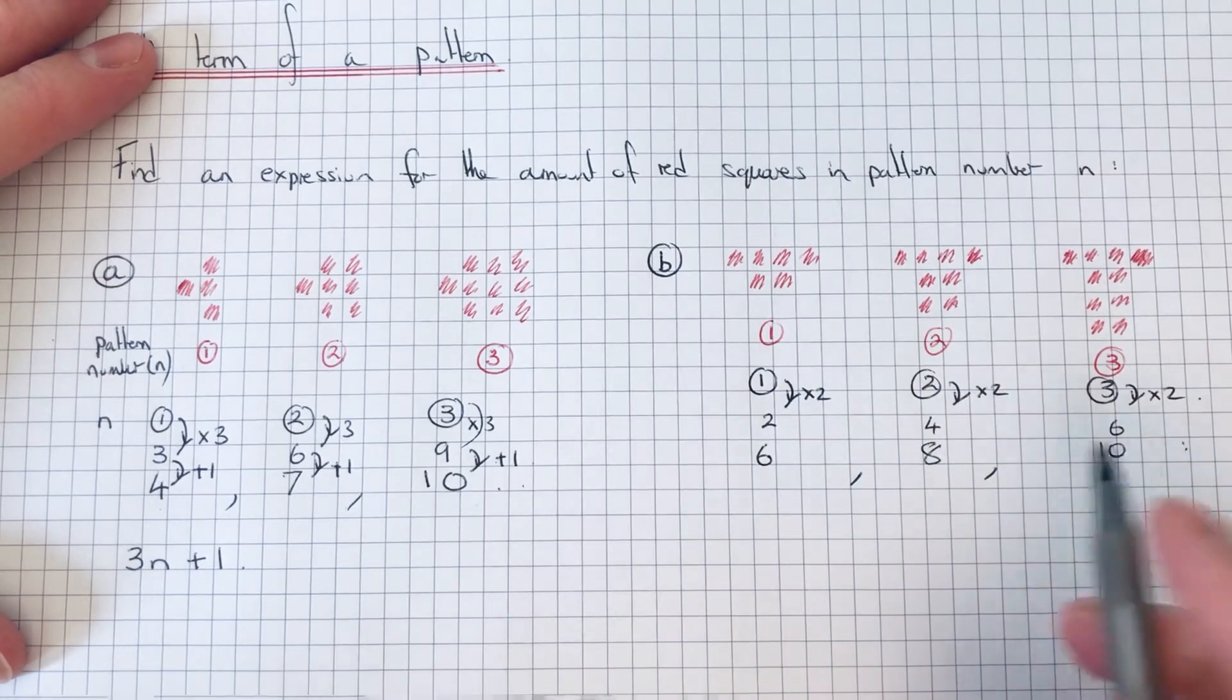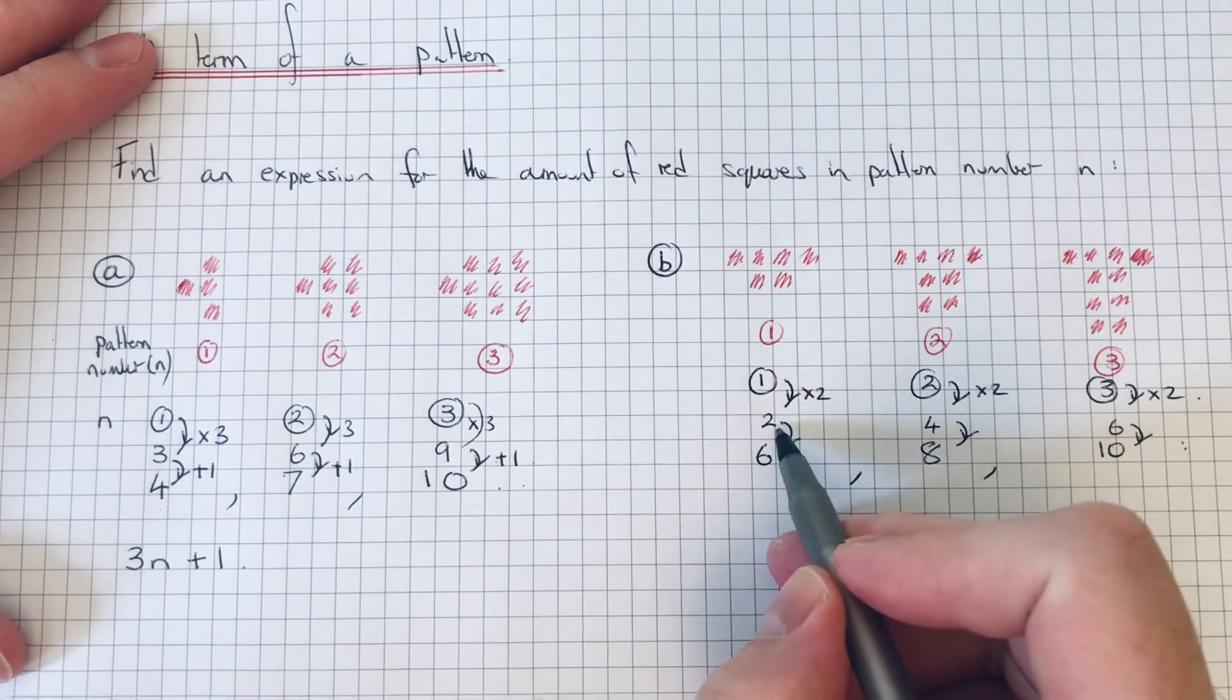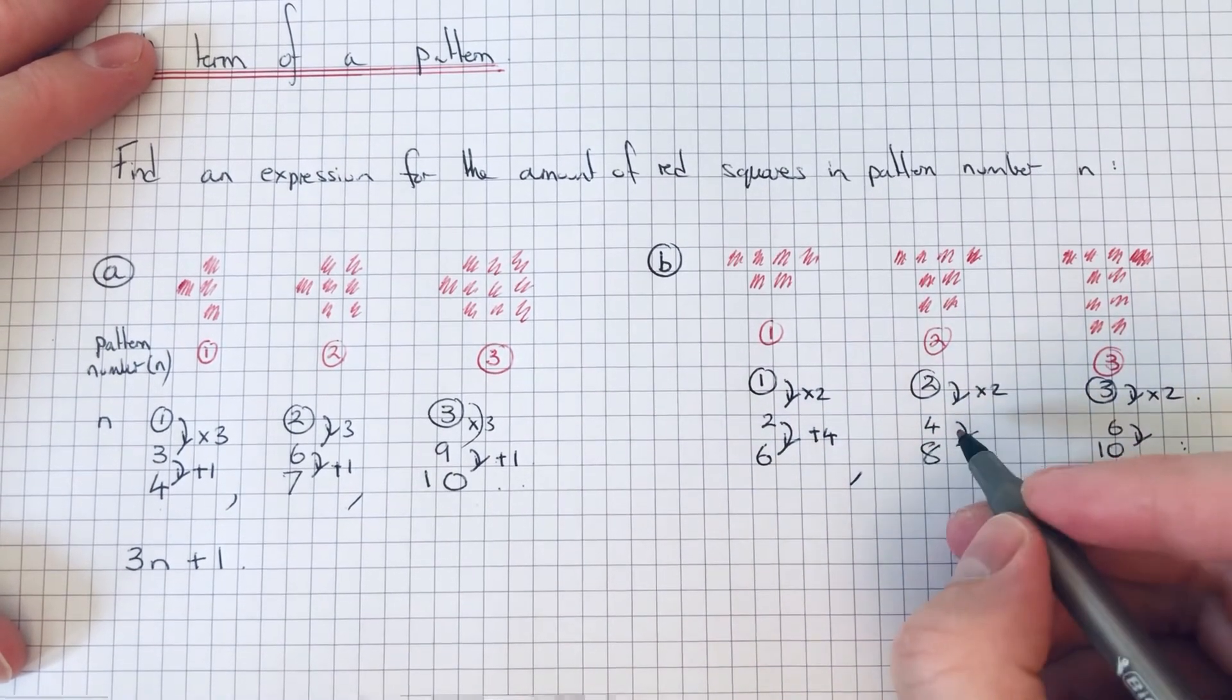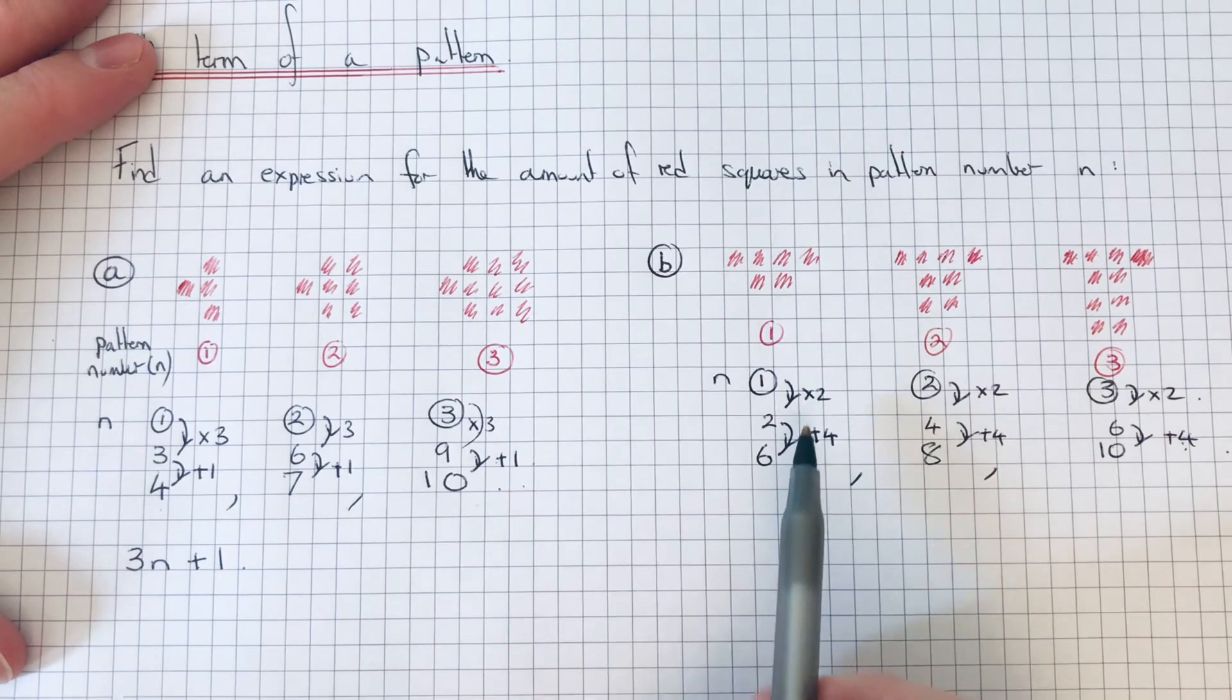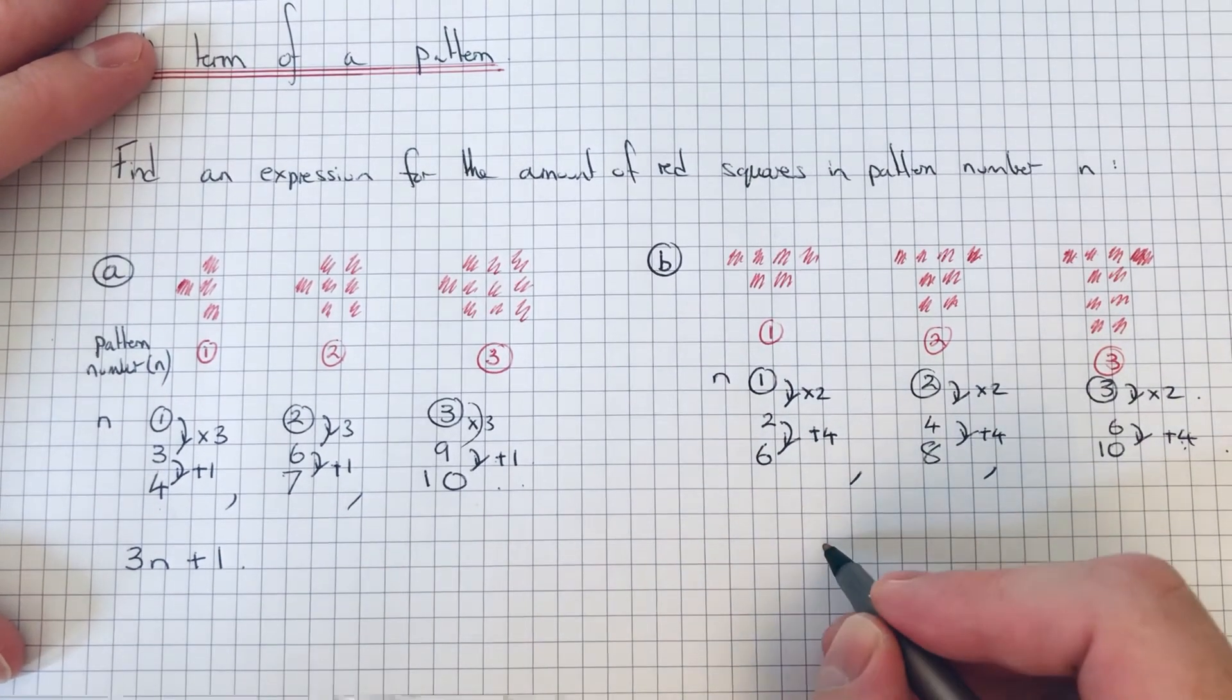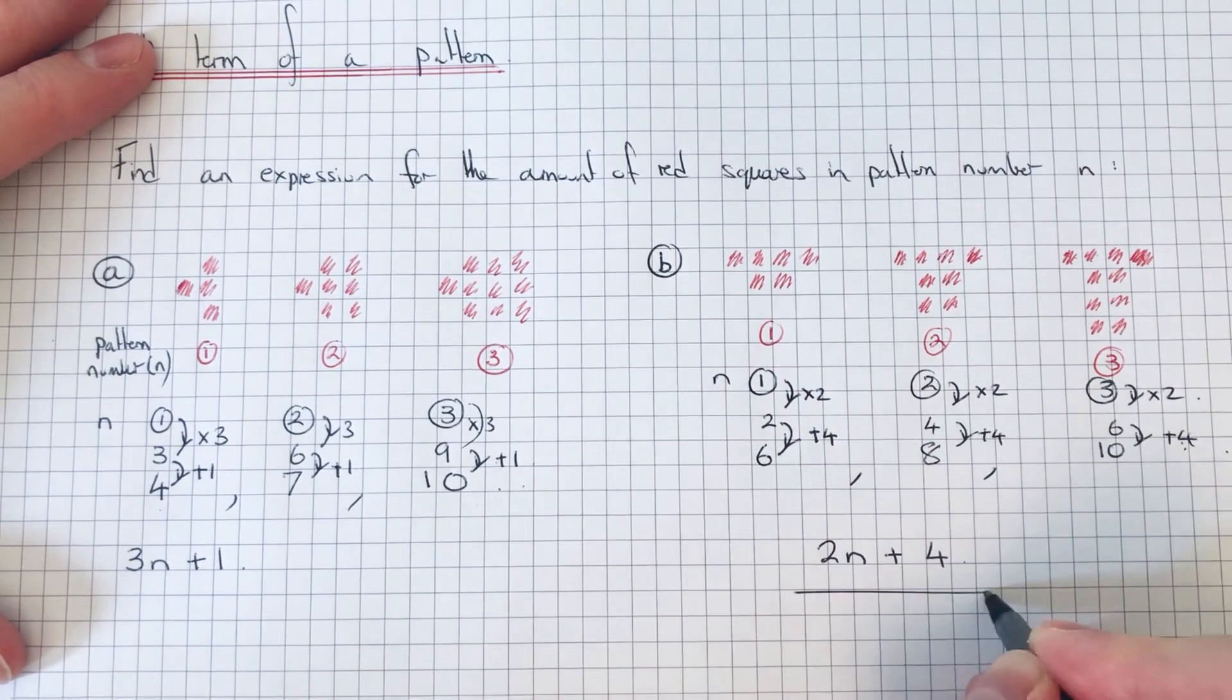It looks like we need to add 4 to 2 to give us 6, and this works on the second one and the third one. So we've multiplied the pattern number by 2 and we've added on 4. So our nth term will be 2n plus 4.